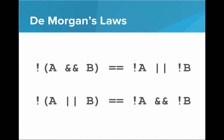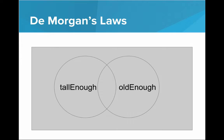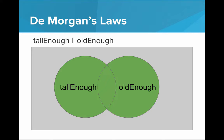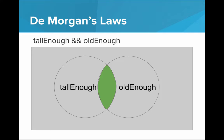But why exactly do these laws work? To understand how DeMorgan's Laws work, let's think of it as a Venn diagram. Imagine this entire gray square as all the people in the world — everyone in existence. This circle is all the people who are tall enough to ride the ride, and this green circle is all the people who are old enough. If we OR them together, these are all the people who are either tall enough or old enough. And the intersection — the small subsection — represents people who are both tall enough and old enough.